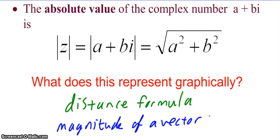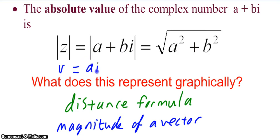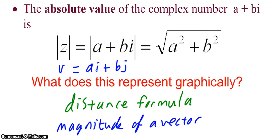We should hopefully see that there's a lot of overlap between how a vector is written and how a complex number is written. Normally a vector v equals some a·i plus b·j. For a complex number, z is a plus bi. So we want to make sure we do not confuse the i in a complex number and the i in a vector — they are very different things.